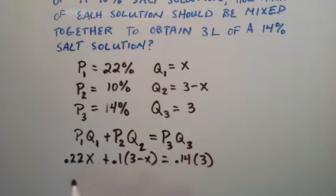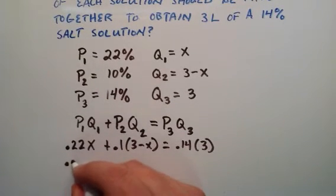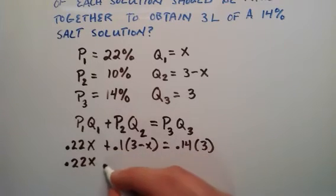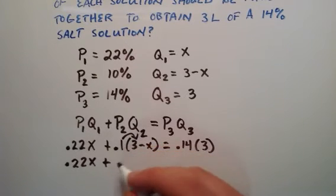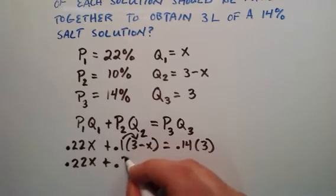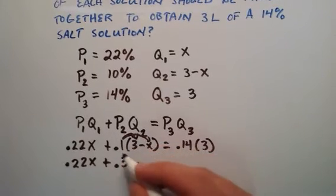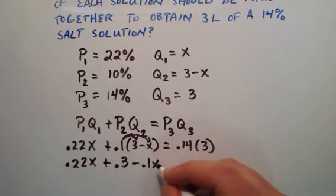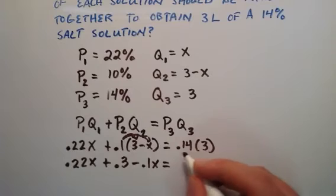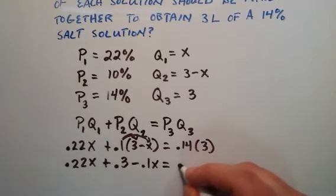Now we have an algebraic equation to solve. We have 0.22x plus 0.1 times 3. Distributing this in gives us 0.3, minus distributing the 0.1 into the second term now, 0.1 times x is 0.1x. That's equal to 0.14 times 3, and that equals 0.42.